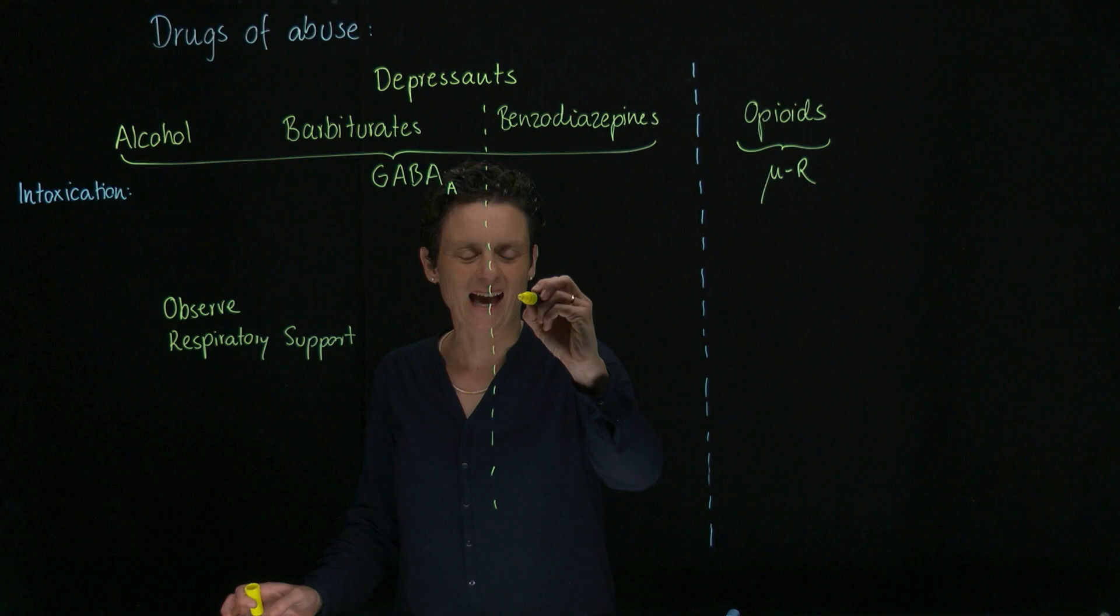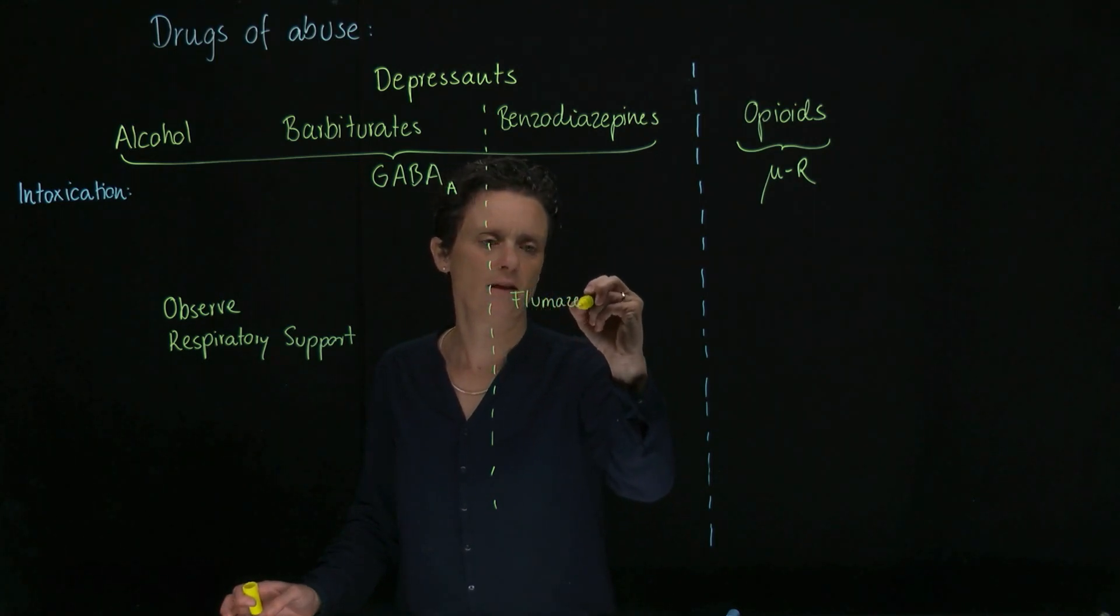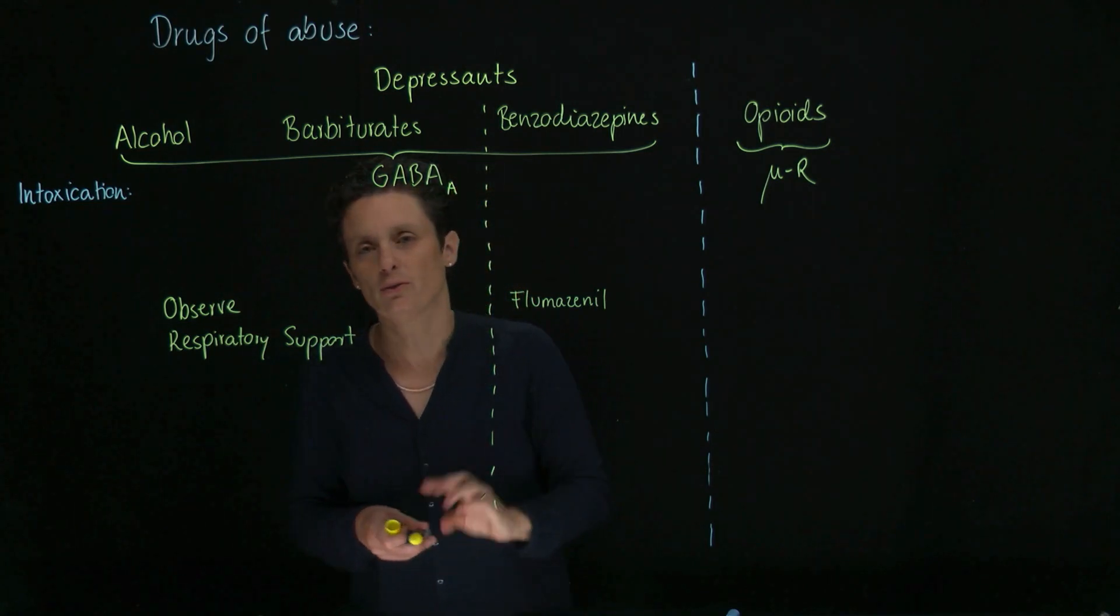For the benzos, we have an antagonist that's called flumazenil. But usually you also observe.